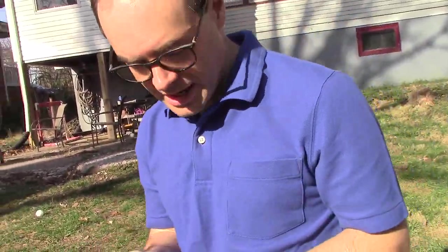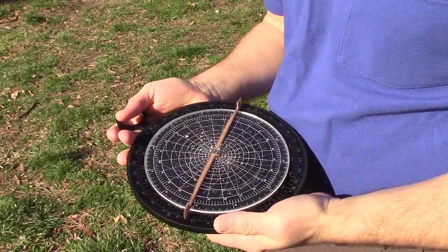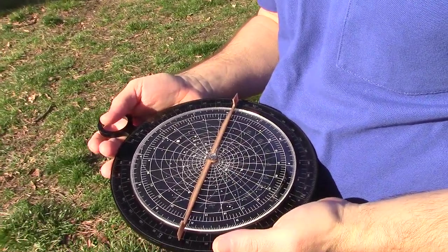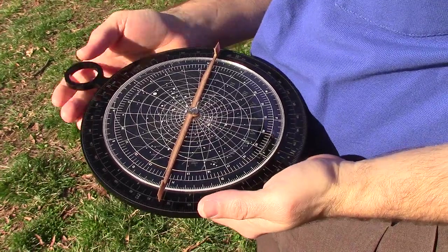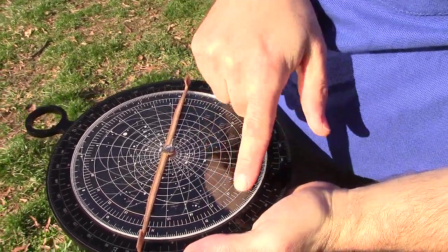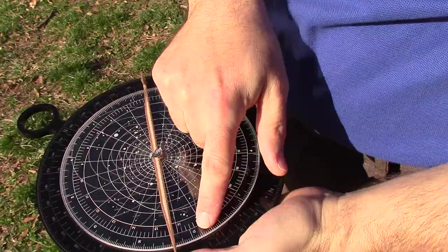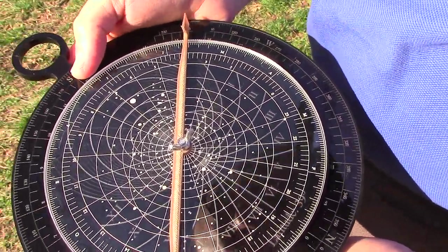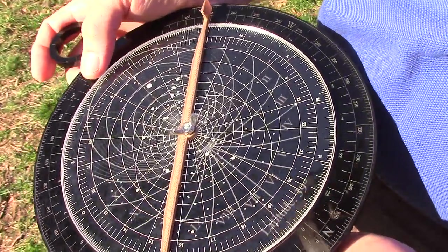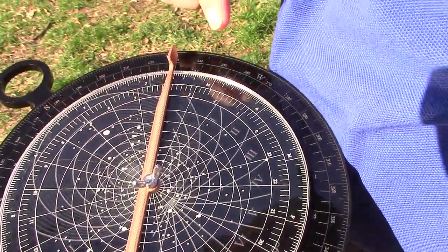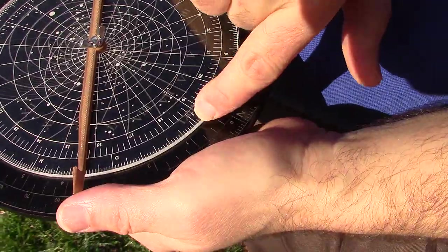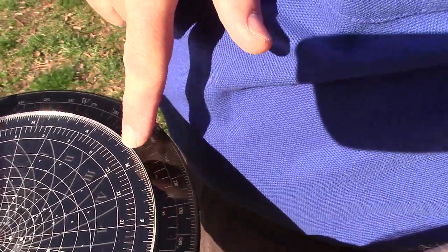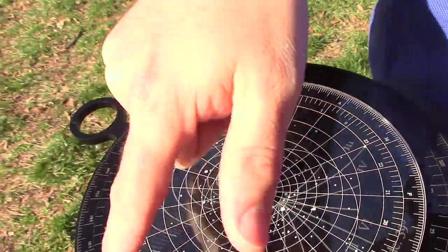Now flip over the astrolabe. What you need to do is you need to know what day of the year it is. Today is March 18th. If you look around the edge of the clear plastic, there's a calendar on the large astrolabe. Just the initials of each month are listed: J for January, F for February, March, April, May, June, July, and so on.